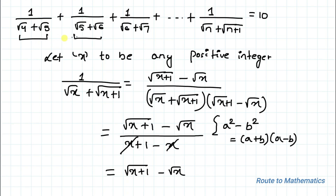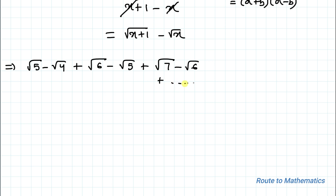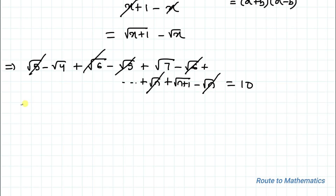After rationalizing each term, the series becomes: (√5 − √4) + (√6 − √5) + (√7 − √6) + ... + (√(n+1) − √n) = 10. This is a telescoping series — √5 and √5 cancel, √6 and √6 cancel, and so on, until we are left with √(n+1) − √4 = 10.